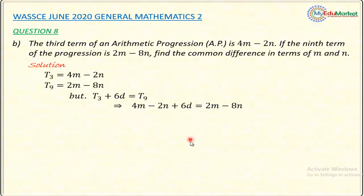So, I continue simplifying this because I'm interested in the common difference, and that common difference is in terms of M and N. What I'm doing now is making D the subject of the formula. So, 6D on the left and 4M and 2N taken to the right-hand side. I will now have 6D equals 2M minus 8N.